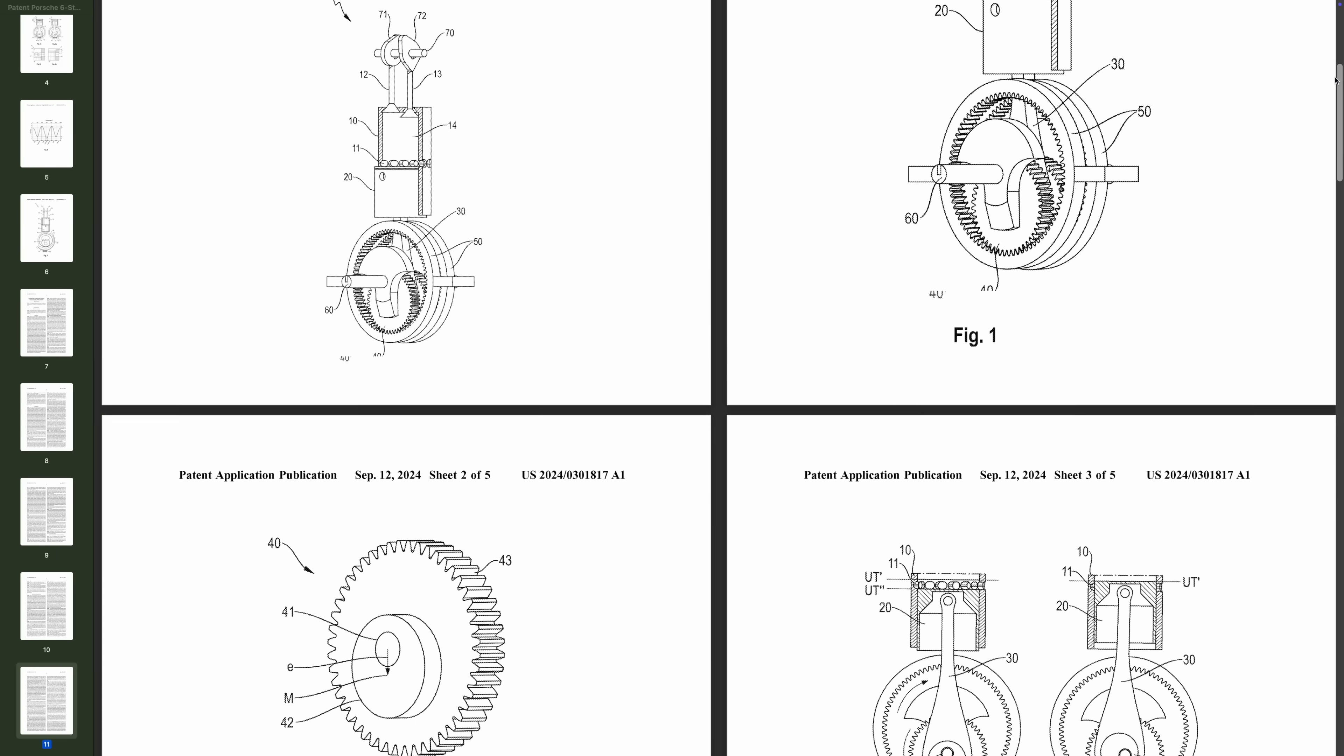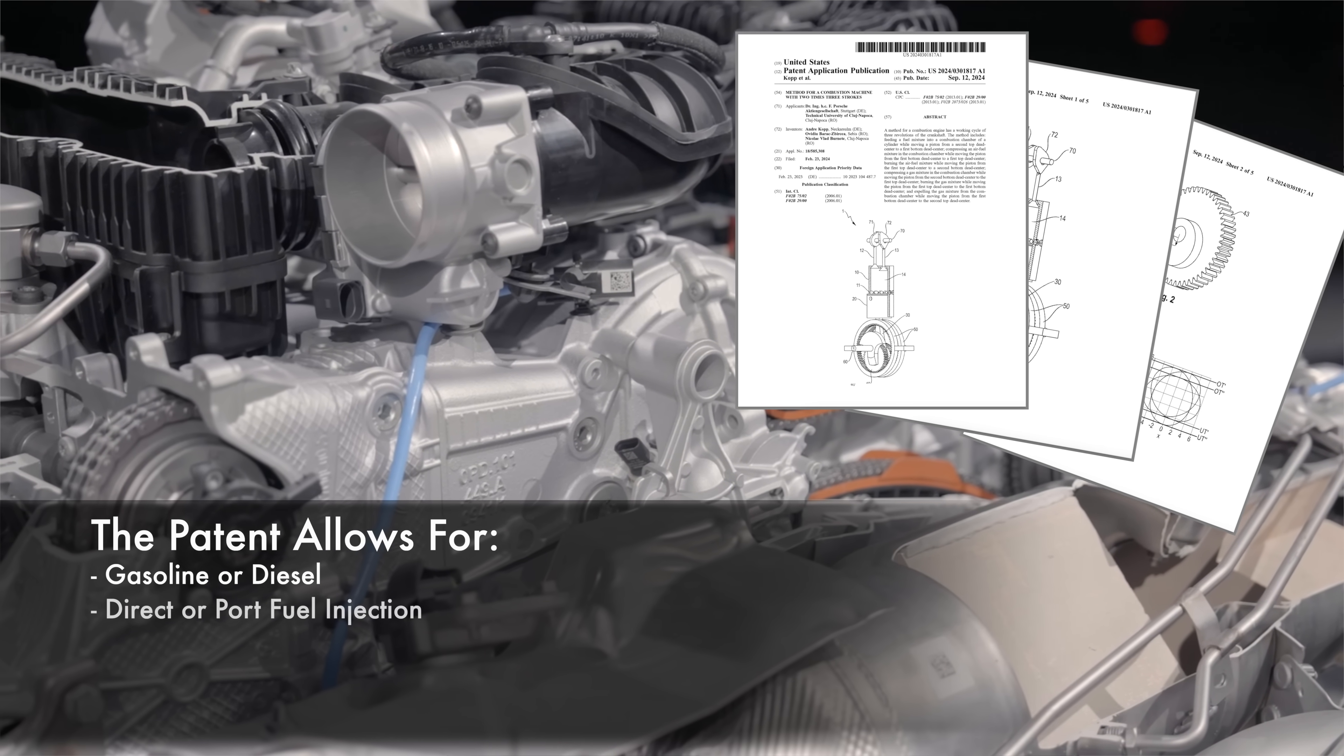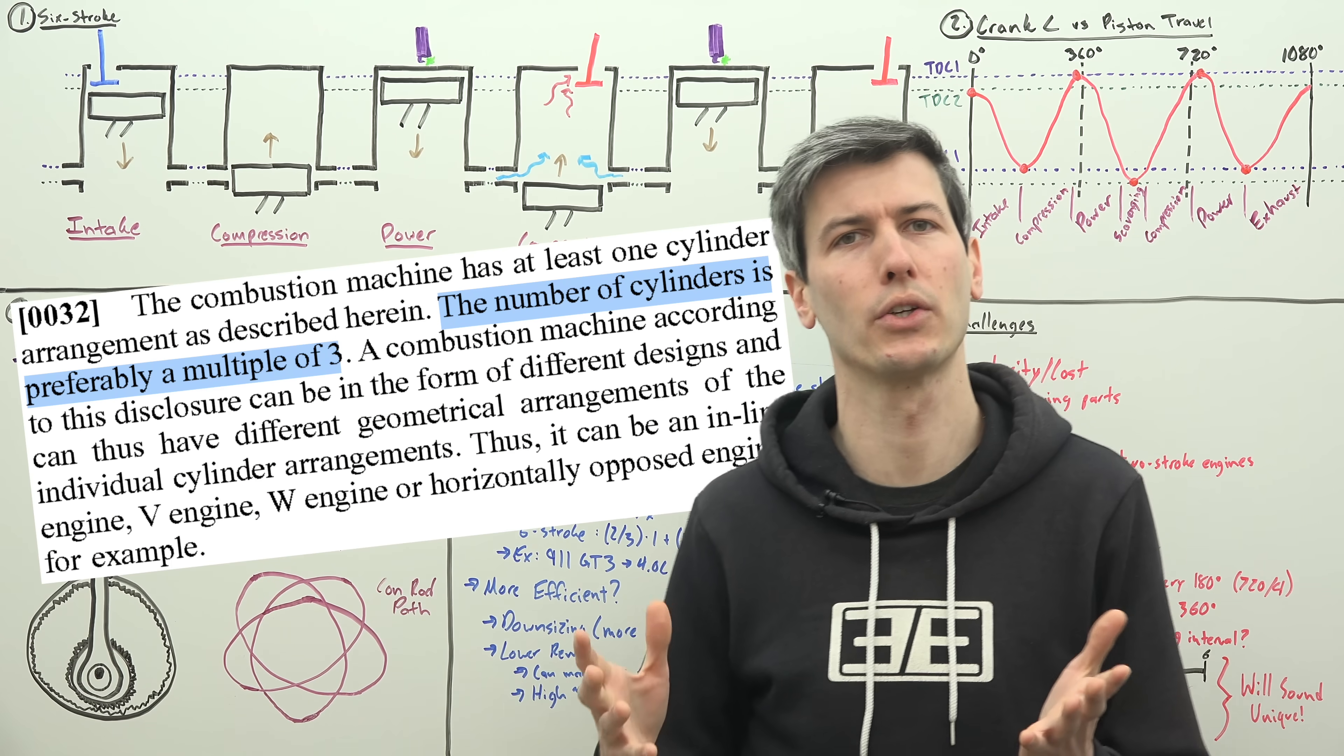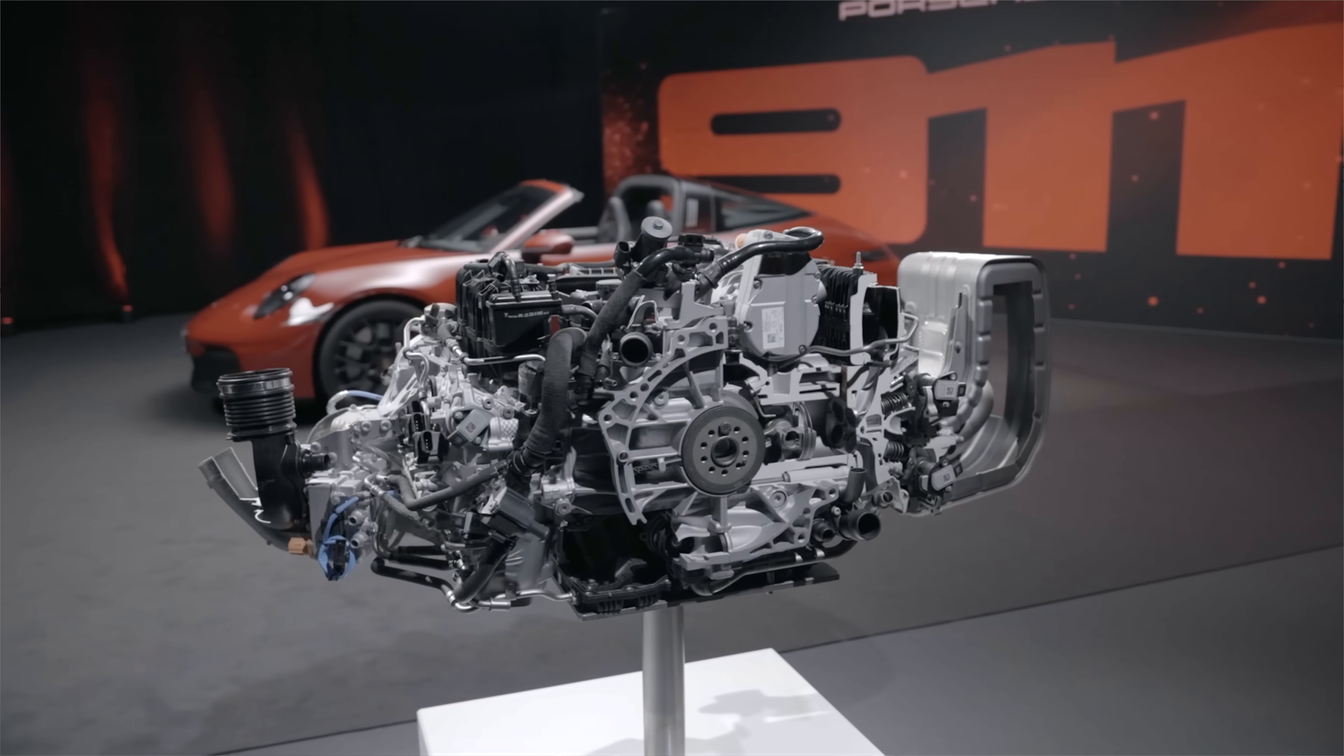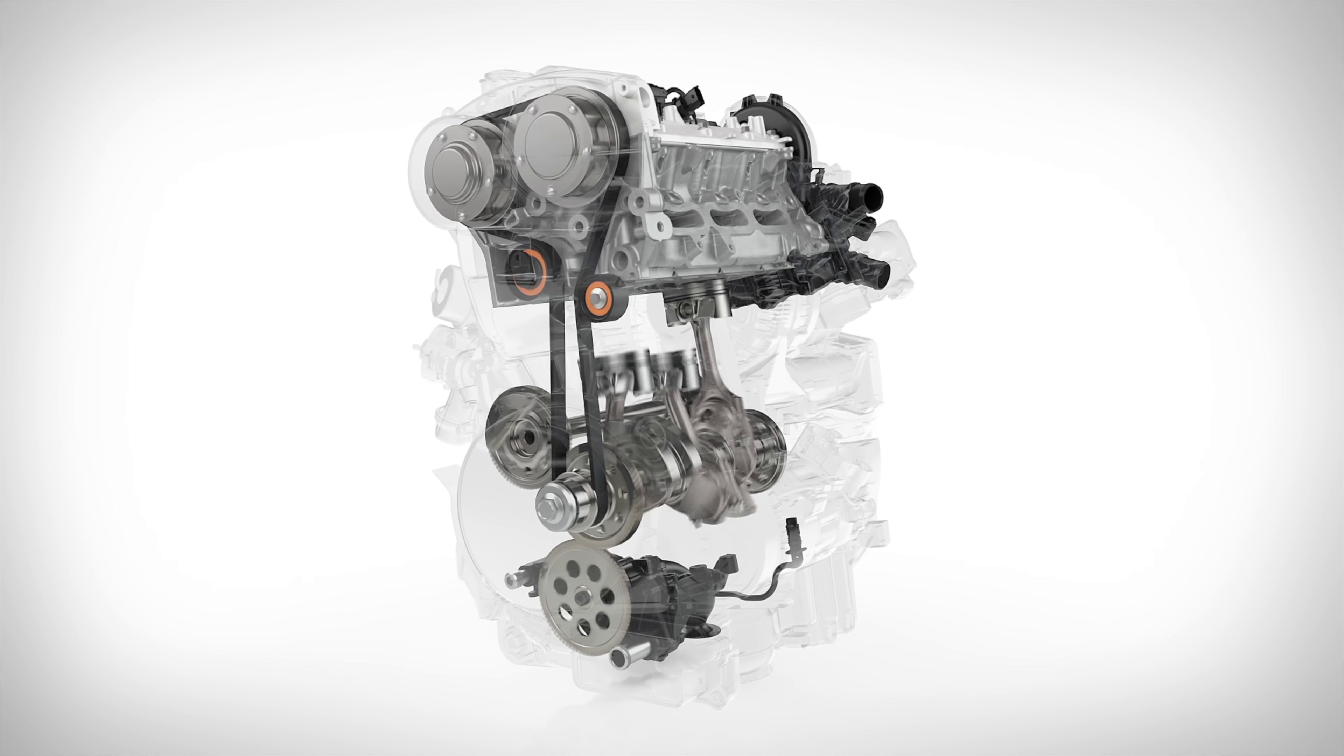Now before we dive any further, it's important to realize that patents are intentionally broad, right? So we don't know exactly how this engine is going to turn out unless one is actually developed. The patent allows for this engine to be gasoline or diesel. There are many different fuel injection methods that are possible, different scavenging methods, different number of ports, different cylinder counts. Though the patent does suggest that the cylinder count should be a multiple of three. But it could be an inline engine or a V or a W or horizontally opposed engines, which of course Porsche is famous for their boxer six cylinder.